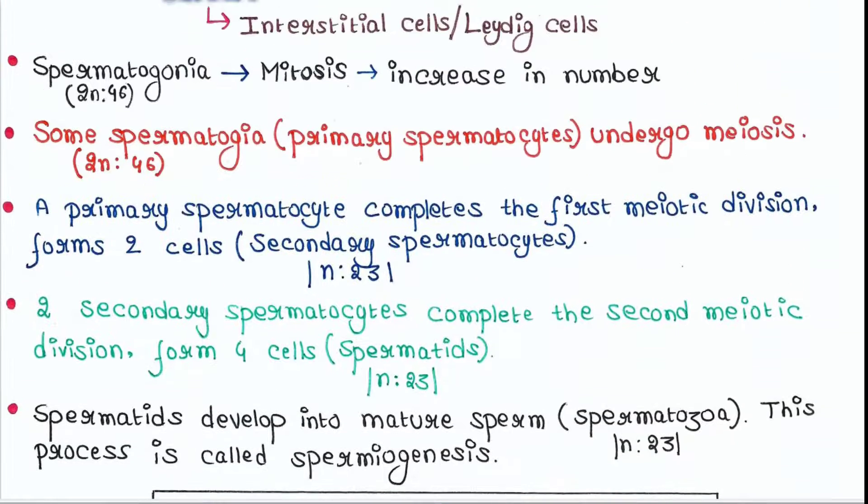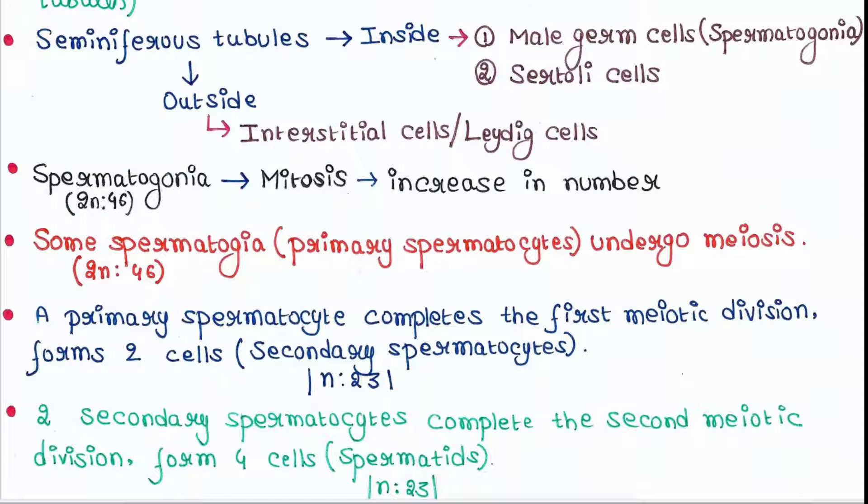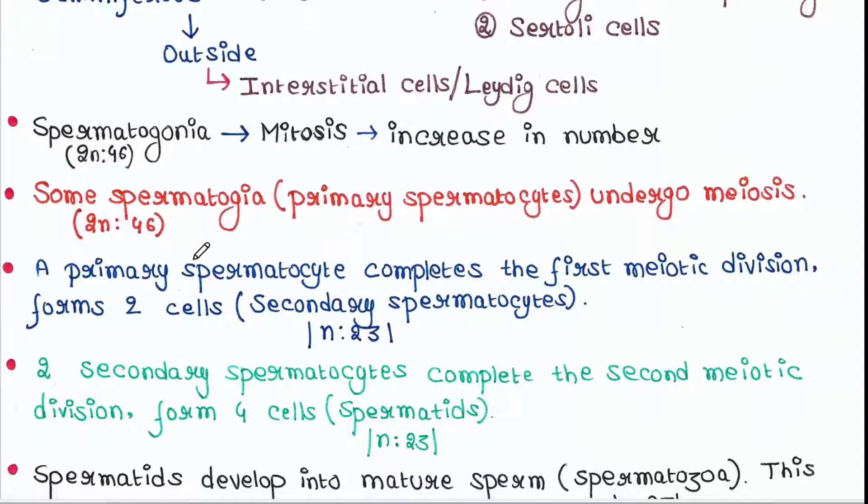Okay, so these spermatogonia are diploid cells with 46 chromosomes. They undergo mitosis continuously and increase in number. Some of the spermatogonia are now called primary spermatocytes, and they undergo meiosis.